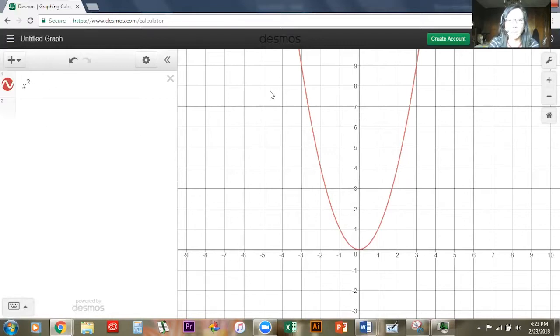So here we have our red graph, it is a graph of x squared. You can see that we have this point at zero zero, this point at one squared which is one, and this point over here at negative one squared which is one.